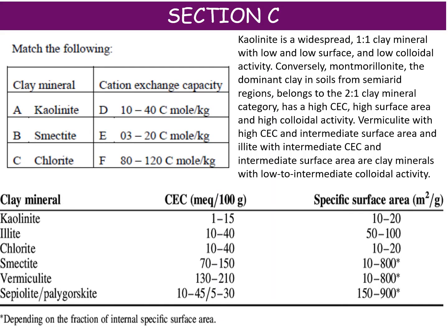The next question asks about clay minerals and their cationic exchange capacities — this is a sure-shot matching question. Kaolinite is a widespread 1:1 clay mineral with low CEC, low surface area, and low colloidal activity. Conversely, montmorillonite and smectite are 2:1 clay minerals dominant in semi-arid region soils with high CEC, high surface area, and high colloidal activity. Remember: 1:1 clay has low surface area, 2:1 clay has high surface area.